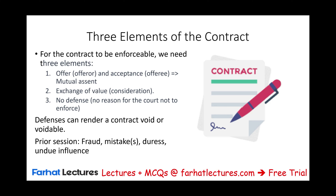In the prior session, we looked at certain events that could happen that make the contract either void or voidable, such as fraud, mistake by one party or both parties, duress, and undue influence. In this session, we will look at additional factors that could make the contract either void or voidable. Let's go ahead and get started.